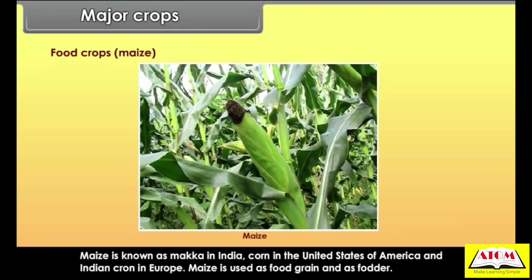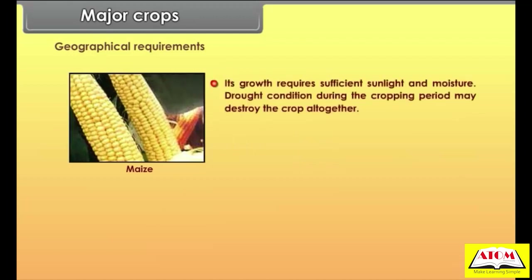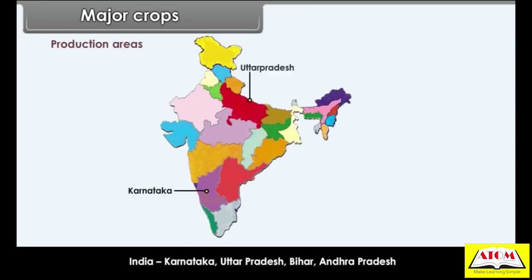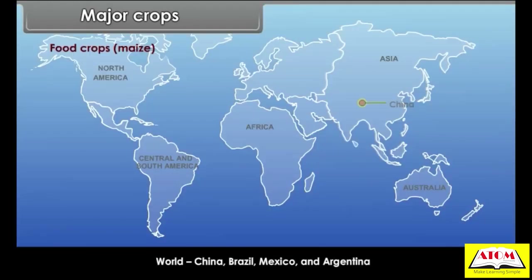Maize is known as Makkah in India, corn in the United States of America, and Indian corn in Europe. Maize is used as food grain and as fodder. Geographical requirements: its growth requires sufficient sunlight and moisture. Drought conditions during the cropping period may destroy the crop altogether, and stagnant water in the maize fields is harmful to plants. Production areas — India: Karnataka, Uttar Pradesh, Bihar, Andhra Pradesh. World: China, Brazil, Mexico and Argentina.